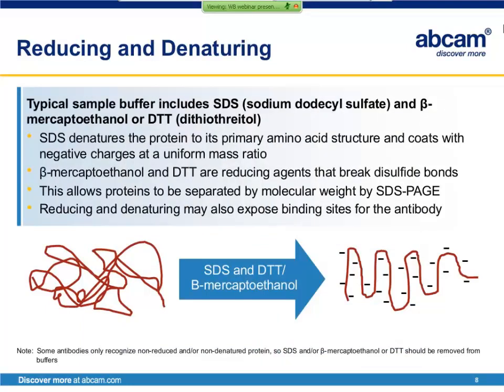For reducing and denaturing the sample buffer, the buffer contains two agents: SDS, or sodium dodecyl sulfate, and either beta-mercaptoethanol or dithiothreitol, abbreviated DTT. The SDS is a denaturing agent which helps break the protein down to its amino acid structure, and it also coats the protein in negative charges at a uniform mass ratio. This uniform ratio of negative charges will be essential during the next step of the procedure, gel electrophoresis. Beta-mercaptoethanol and DTT are reducing agents which break disulfide bonds, also breaking down the protein to a linear primary amino acid structure, as simplified in this image.